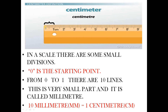From zero to one there are thin lines — one, two, three, four, five, six, seven, eight, nine, ten. This very small part is called millimeter. From zero to one, this very small part is known as millimeter.